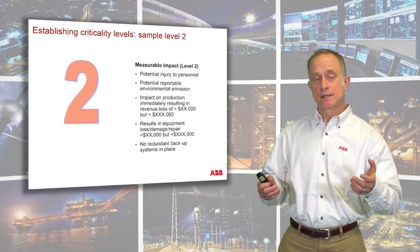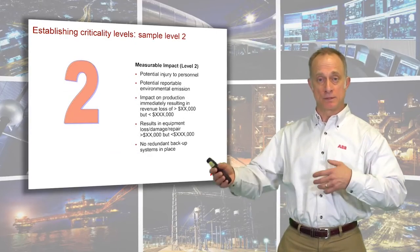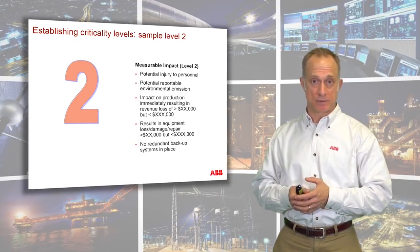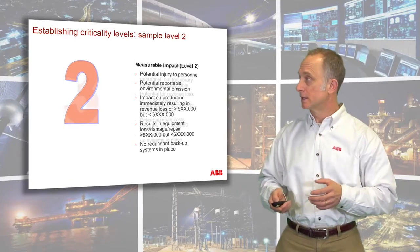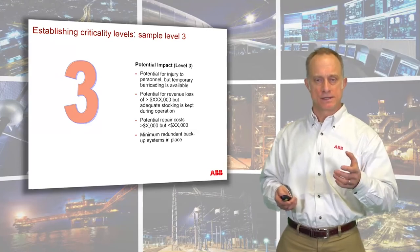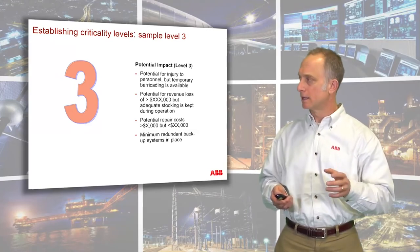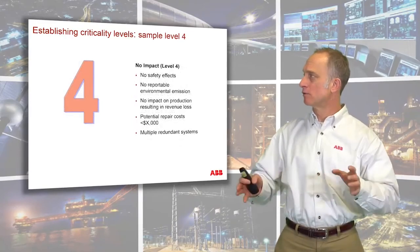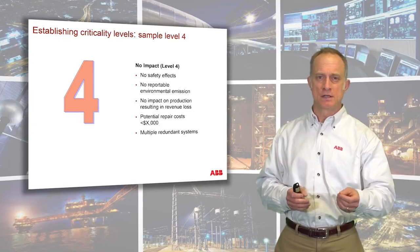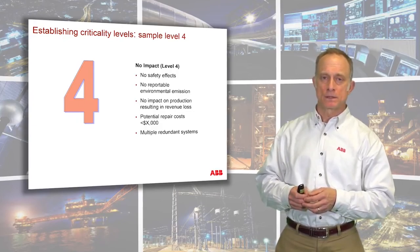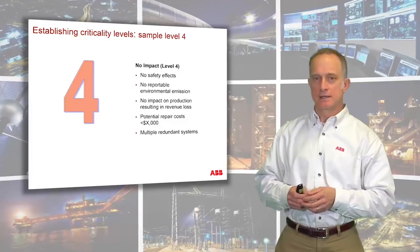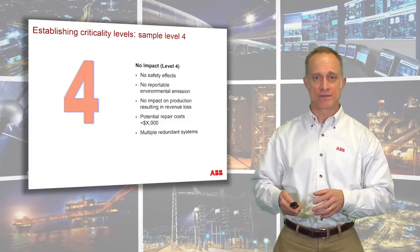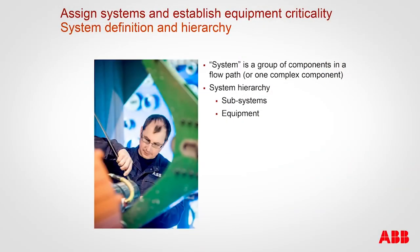Criticality level two might be a measurable impact on safety and environment, or a less costly impact to production, or less costly maintenance. Level three is just a potential impact — still something to watch, but not high likelihood. Level four has no safety effects, no environmental effects, no production impact, very minimal maintenance costs, and possibly multiple redundancies — so you don't have to worry as much about it.